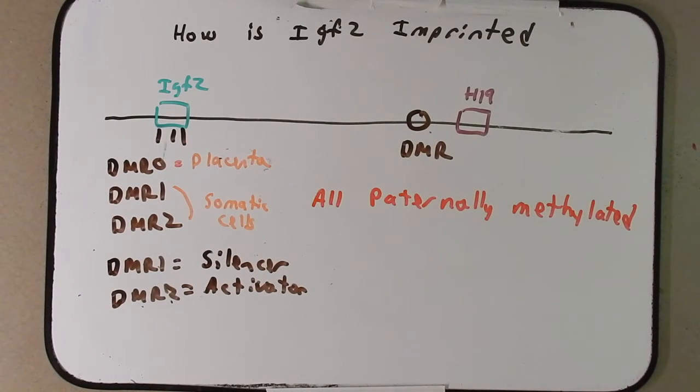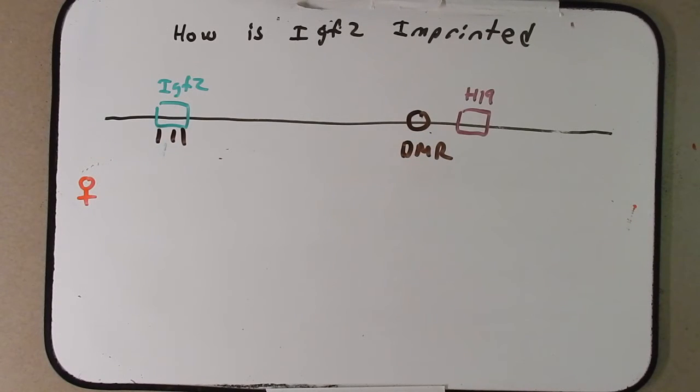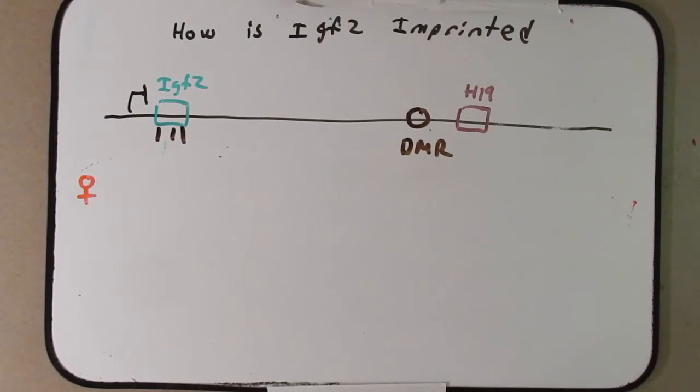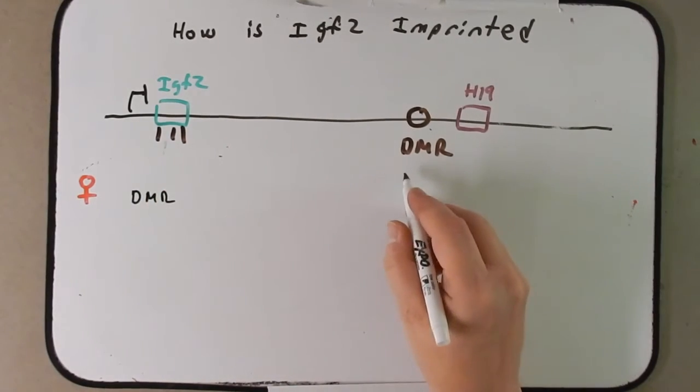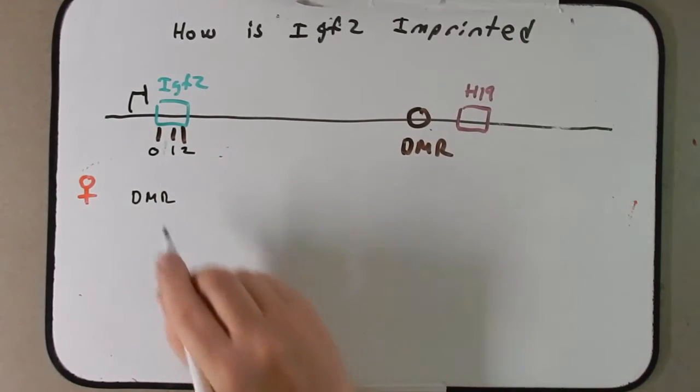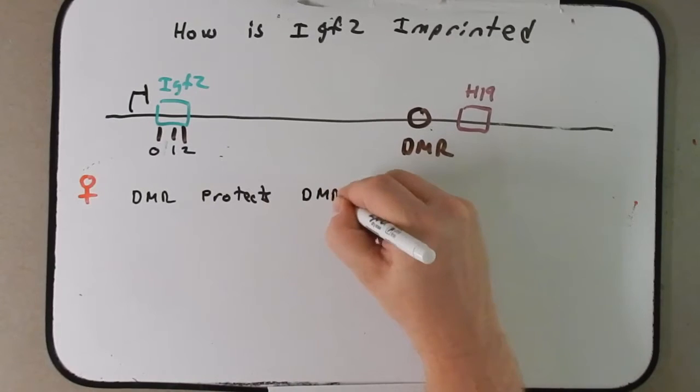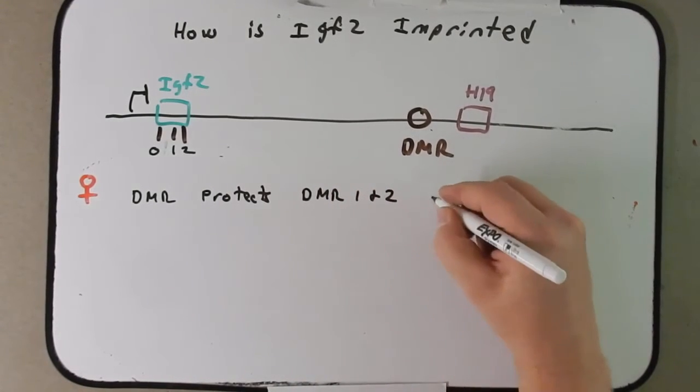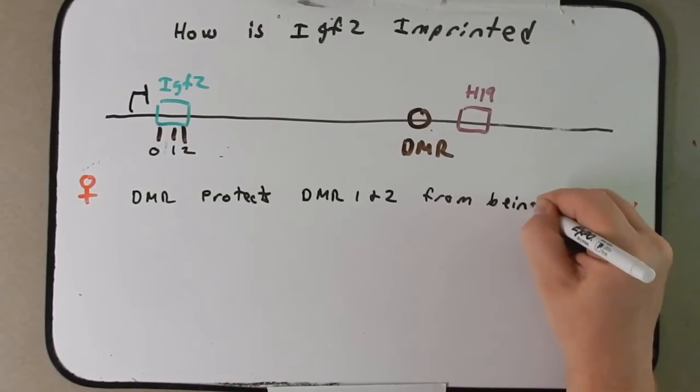So again, we're going to talk about the maternal source first. And remember, the result is going to be that IGF2 is not going to be expressed. So in the maternal example here, DMR, this one here. Oh, I erased these. This was, remember, 0, 1, and 2 DMR. So DMR from H19, we'll say, protects DMR1 and 2 from being methylated, and it's going to do this by DMR interacting with DMR1.